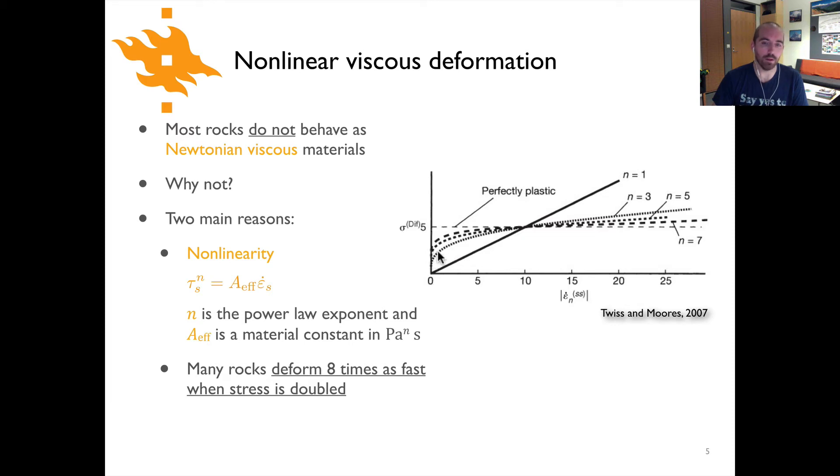So if the stress level you consider here for instance is maybe halfway between zero and five on this vertical axis, somewhere here, you can see that we've got a strain rate of about one or maybe two. If you double the stress in this case to go up to the dashed line five, you can see that the strain rate has gone up to something like ten. And so that's where this doubling of stress resulting in eight times as much deformation comes from.